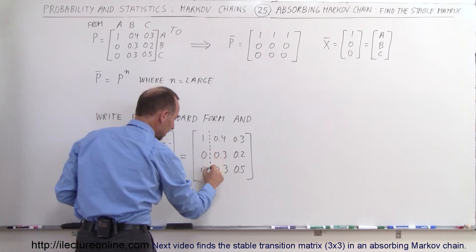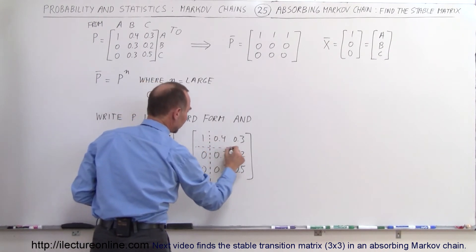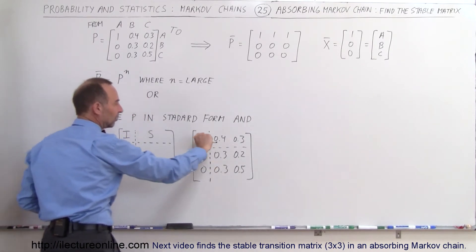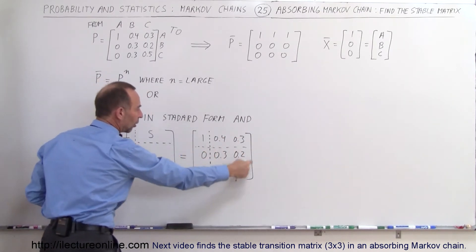Notice when we move the lines in here and we'll put the lines in there, then this becomes what we call the identity matrix. This is the zero matrix, this is the S matrix, and this is the R matrix.